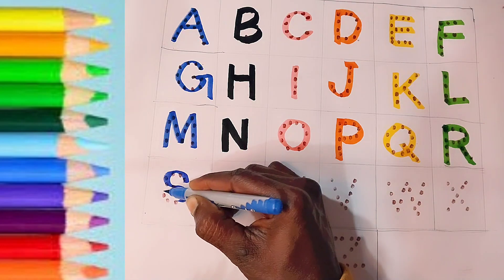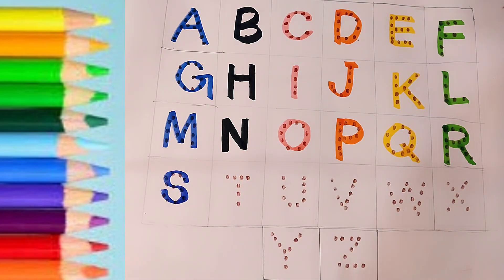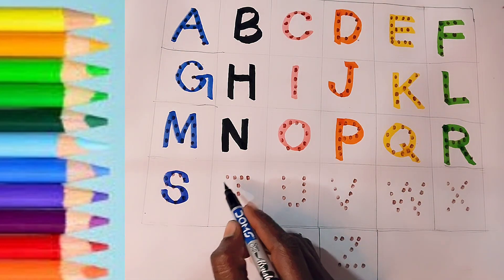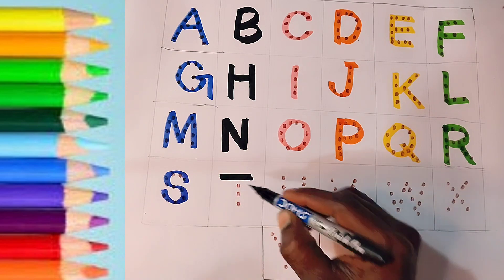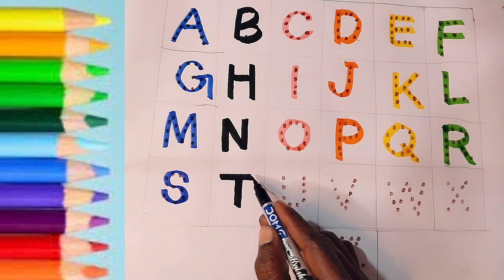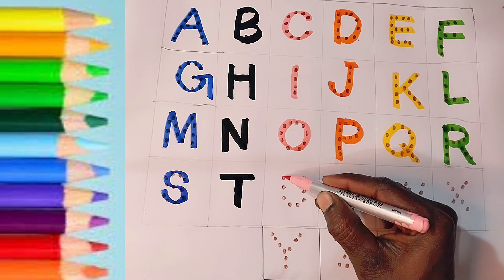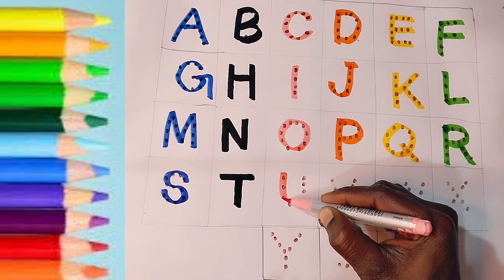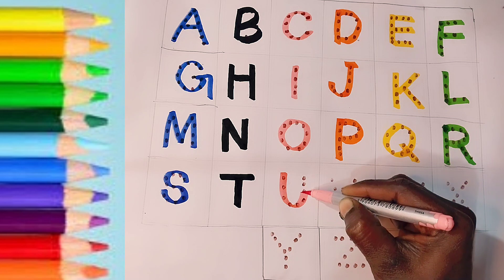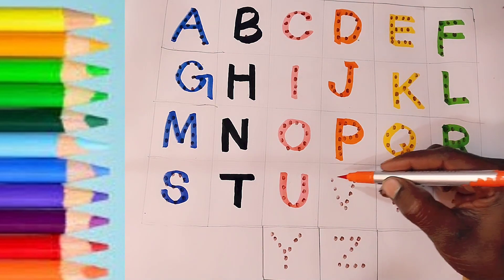S for sun. Black color. T for tiger. Light pink color. U for umbrella.